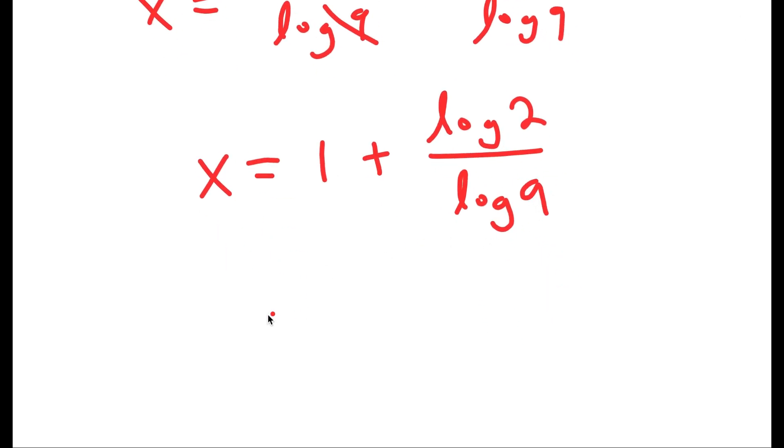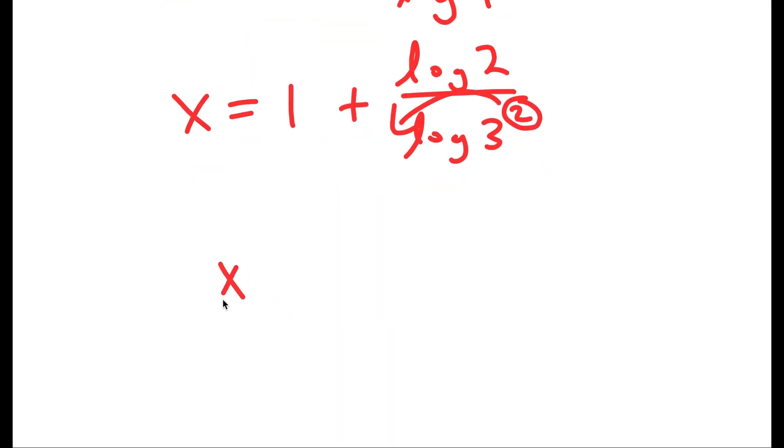Now log 9, I can rewrite as log of 3 squared. And I can move the 2 to the front. So I get x is equal to 1 plus log 2 over 2 times log 3.